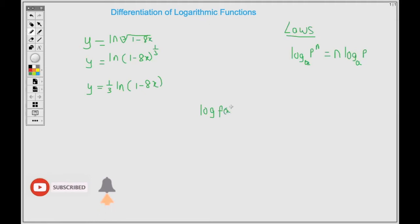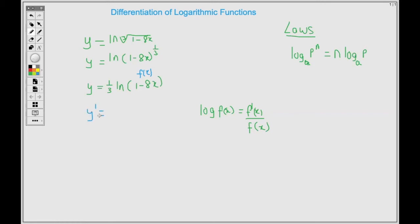Now, differentiating this, we're going to use the logarithmic rule that says we differentiate f(x) to get f prime of x all over f(x). So using that, we're going to differentiate ln of 1 minus 8x. Our f(x) is 1 minus 8x, so we have to differentiate all of this. We have y prime, which represents the derivative. Rewrite the 1 third, then the ln function becomes a fraction, so 1 minus 8x will be in the denominator. Then we differentiate it, so 1 becomes 0 and minus 8x becomes negative 8.